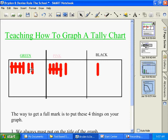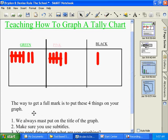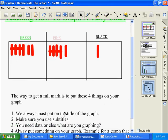Now, as you can see, we've got four. The way to get a full mark on a graph is to put these four things on your graph. Always make sure you put on the title of the graph. Make sure you use subtitles.